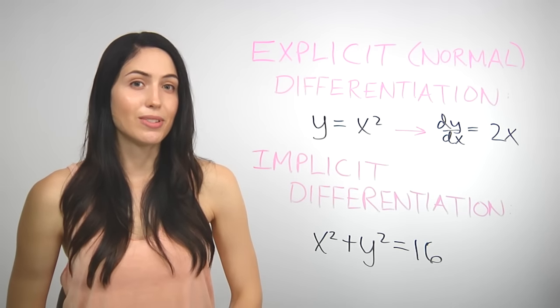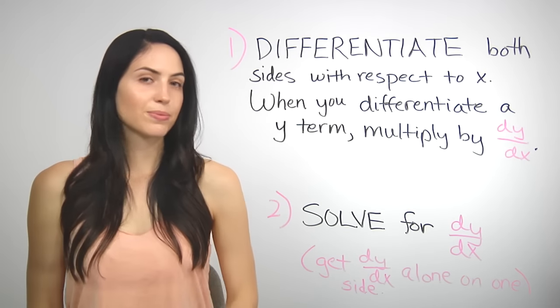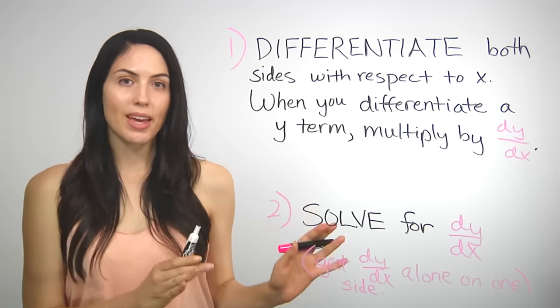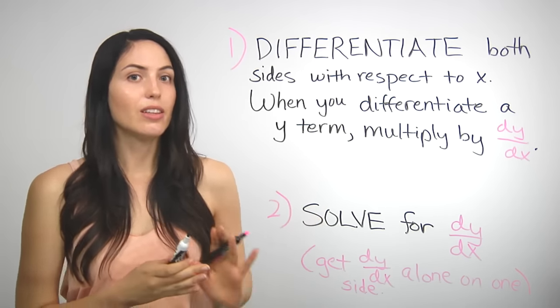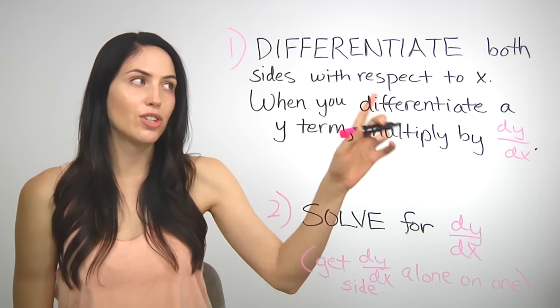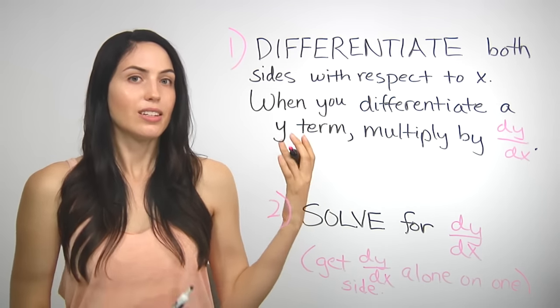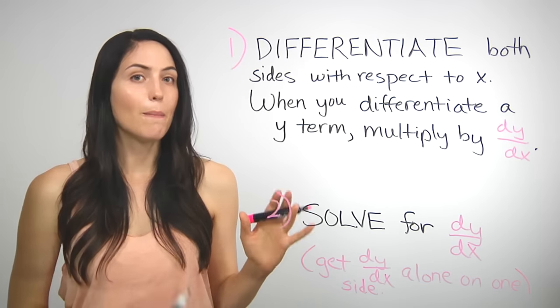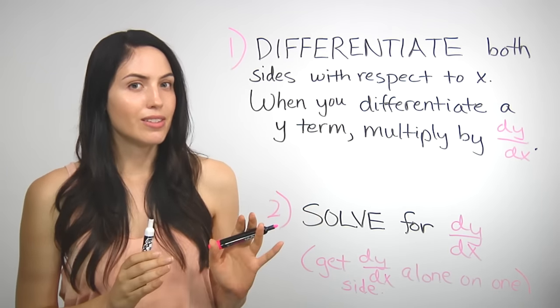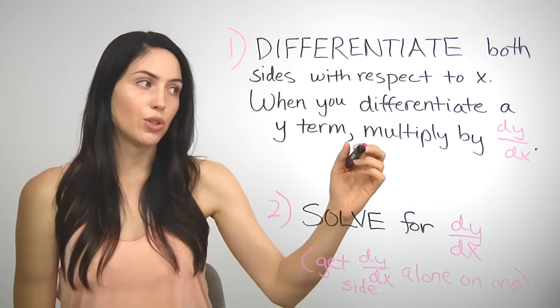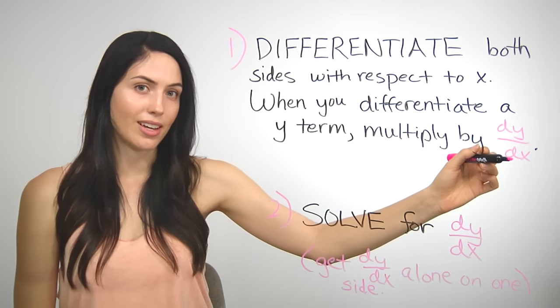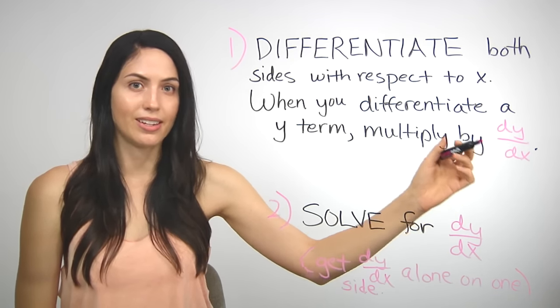So let me show you the steps — the main steps for implicit differentiation. These are the two main steps, and it's really always just these two. The first step is to differentiate both sides with respect to x, so take the derivative in terms of x. But the difference is that if you differentiate a term that has y in it, you will need to attach a dy/dx to the term — multiply the term by dy/dx.